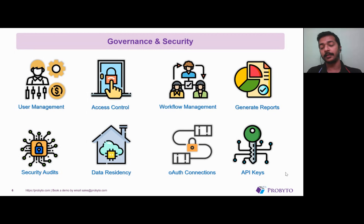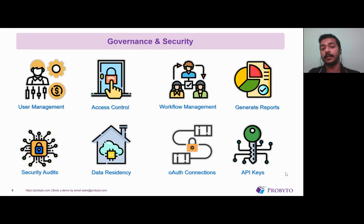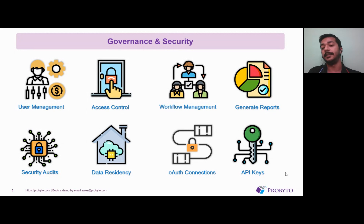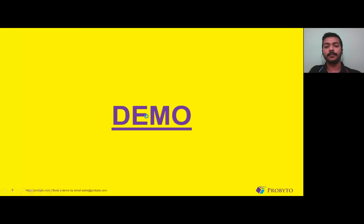We also provide security measures where you'll be able to track down all the accesses of users — who is doing what and how threatening that can be. Data residency is a feature where, depending on your request, we will host the applications accordingly so you can control which IP addresses can access the platform and what should be restricted. All connections for AI tools integrated to the platform can be directly accessed by authorized users without sharing passwords. API keys are available for users who want to integrate to their own or any custom application. So let's start our demo session.